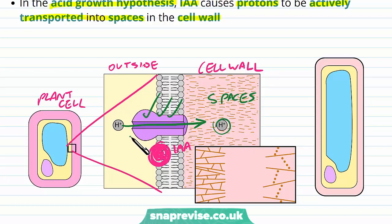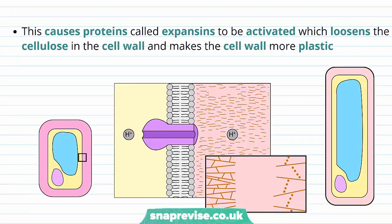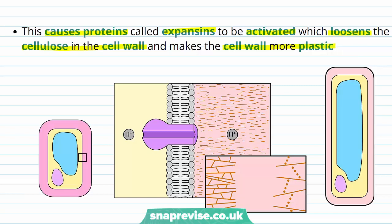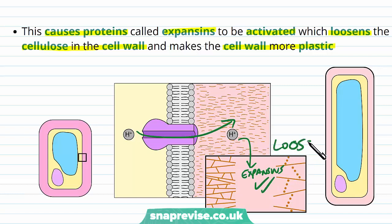This transport is active and therefore uses ATP. When the hydrogen ions enter the spaces in the cell wall, they cause proteins known as expansins to be activated. Expansins loosen and expand the cellulose inside the cell wall, making it more plastic and more bendy. So the hydrogen ions come in, expansins are activated, and they cause the cell wall cellulose to become looser and more flexible — meaning the cell stretches and elongates while the cell wall retains its shape.